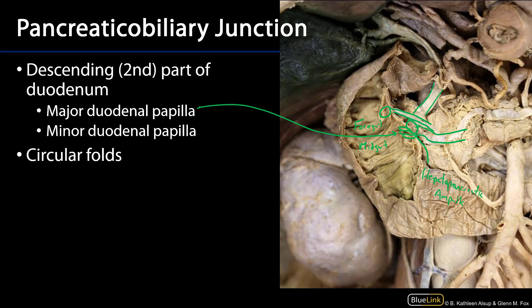We can see the circular rings of duodenal mucosa — the plicae circulares — which are very representative of the second, third, and fourth parts of the duodenum. These are the structures that slow the progress of chyme and increase surface area to maximize absorption of nutrients in the duodenum. We've talked about the duodenum and its closely allied pancreas in both location and function. Thank you very much for your time.